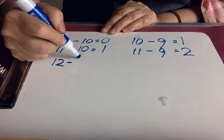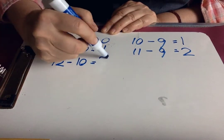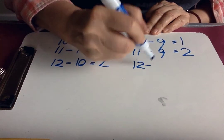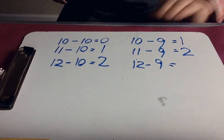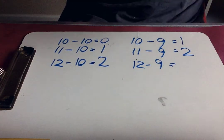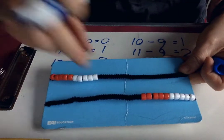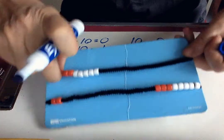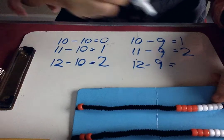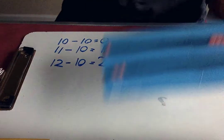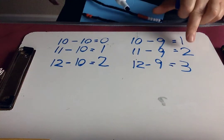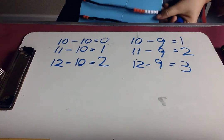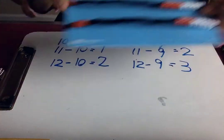Twelve take away ten equals two. Twelve take away nine, how much do you think it's going to be? You know, you can always use your math rack. Twelve take away nine is three. But there is a pattern. You can see that it's one more when it's taking away nine compared to ten. So you could look at that pattern or you could use your math rack.